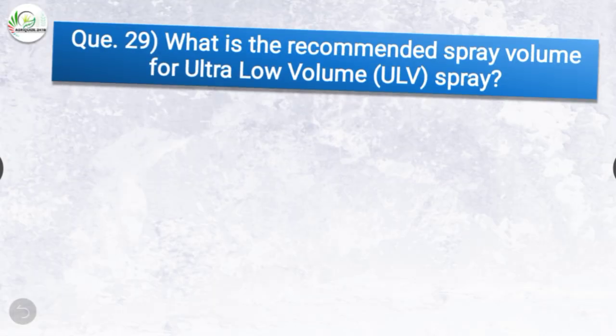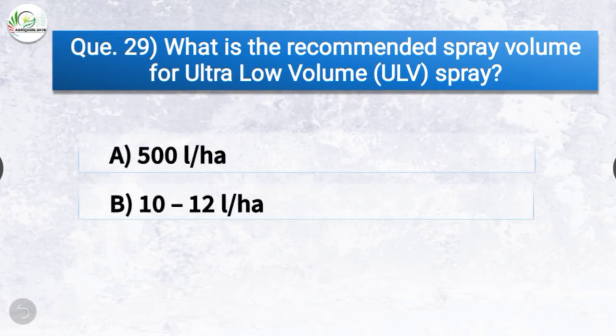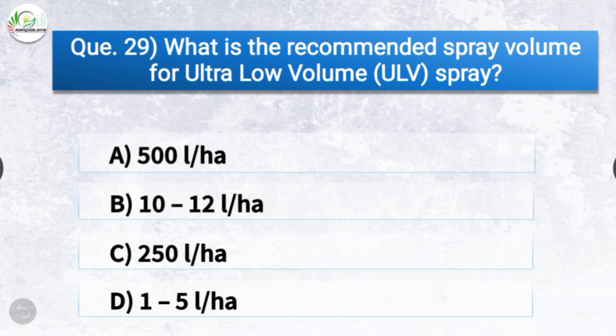Question number twenty-nine: What is the recommended spray volume for ultra low volume spray? The options are 500 litres per hectare, 10 to 12 litres per hectare, 250 litres per hectare, or 1 to 5 litres per hectare. The correct answer is option D, 1 to 5 litres per hectare — the recommended spray volume for ultra low volume spray is 1 to 5 litres per hectare.